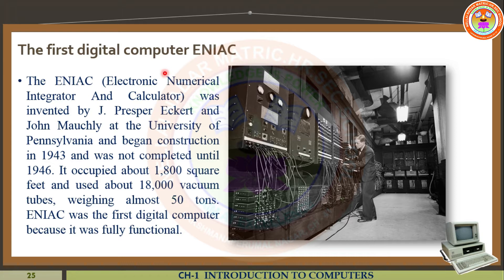The term ENIAC stands for Electronic Numerical Integrator and Calculator. This is the expansion of ENIAC. It was invented by J. Presper Eckert and John McCauley. These are the two persons who invented this machine, ENIAC, at the University of Pennsylvania, and began construction in the year 1943. It was not completed until 1946.